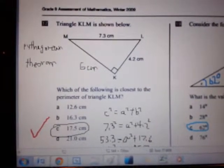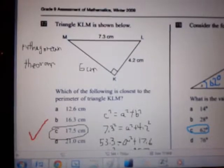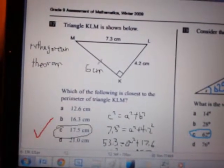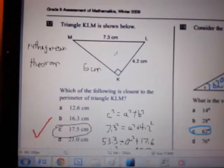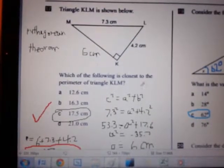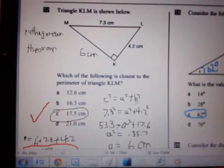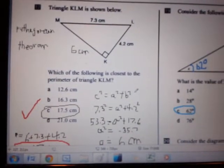For question 17, we need to find the perimeter of triangle KLM as shown here. We have a missing side length, so we use Pythagorean Theorem to find it. C squared equals A squared plus B squared, which you should all be familiar with.